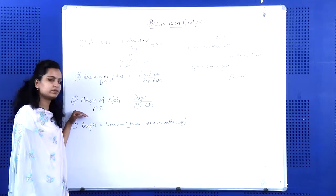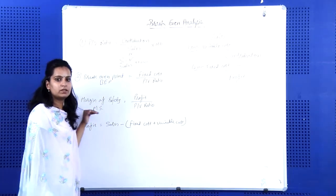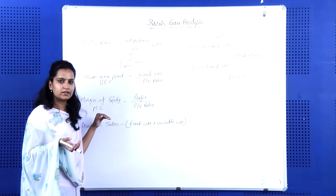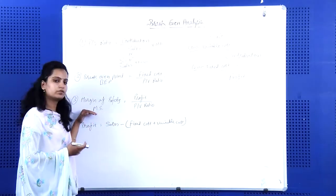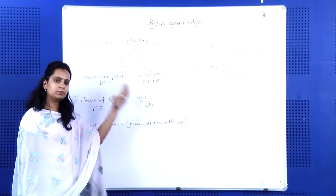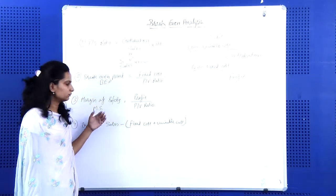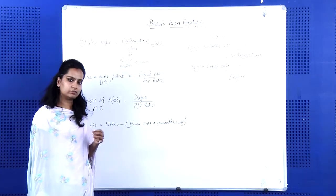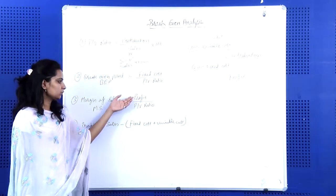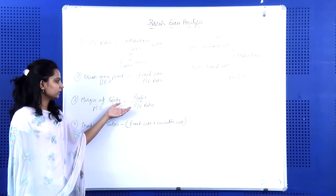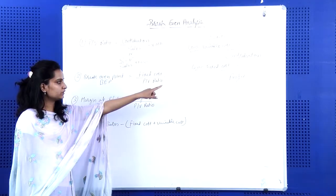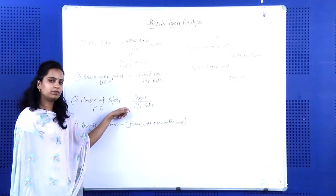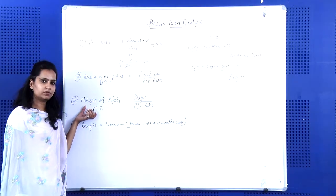Margin of Safety means the sales above the break-even point — the income gained above that point. Within that particular margin we cannot be in a position of loss. The formula for Margin of Safety is profit divided by PV Ratio.